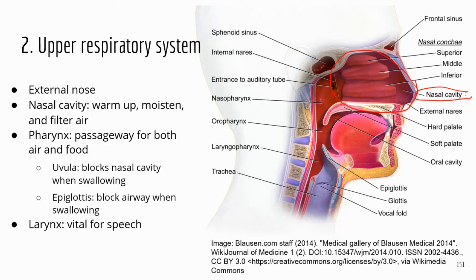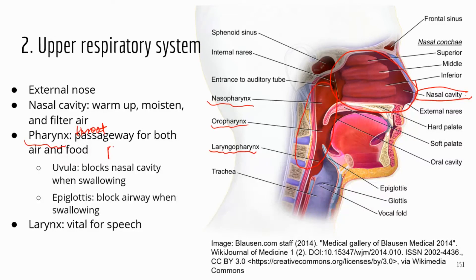After the nasal cavity, air will go through the pharynx, which is commonly known as the throat. The pharynx has subdivisions — nasopharynx, oropharynx, and laryngopharynx — but just know that after the nasal cavity, air goes through the pharynx. The pharynx is shared by both the respiratory system and the digestive system, so food also passes through the pharynx.